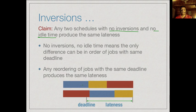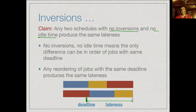Suppose three jobs — blue, yellow, and red — all have the same deadline. In one sequence we do blue, yellow, red; in another, red, blue, yellow. The last of these jobs, regardless of how we shuffle them, will end at the same point because the total sum of their times is fixed. The last job will have the maximum delay with respect to the deadline, and since we are counting maximum lateness, the maximum lateness cannot change regardless of shuffling. Therefore if two schedules have no inversions and no idle time, they produce the same lateness.